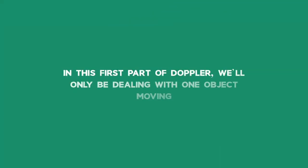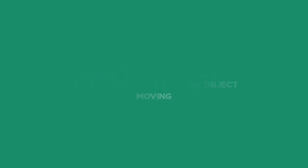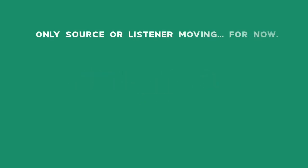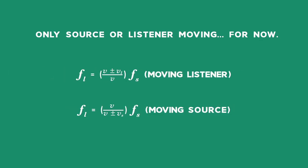Now comes the tough bit: choosing signs in the equation. In the first part of Doppler, we'll only be dealing with one object moving — either the source or the listener, not both. This means you can eliminate some of the complicated bits, which makes the equation a little more manageable.